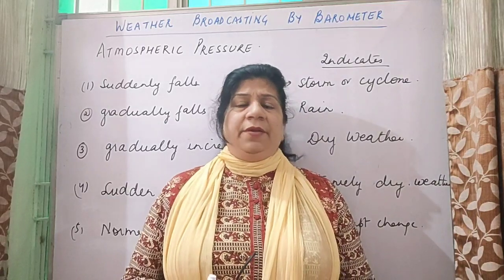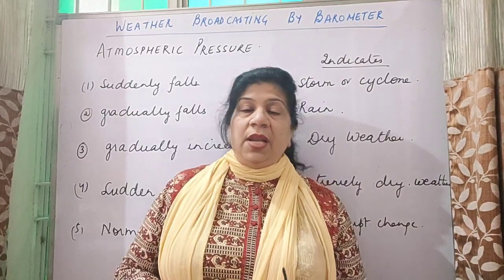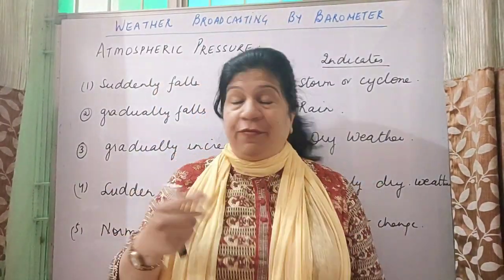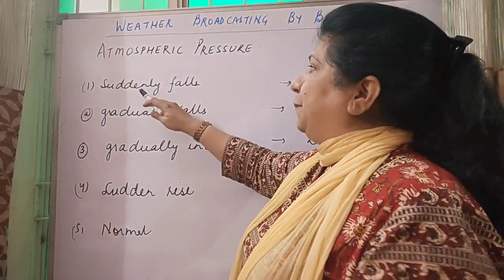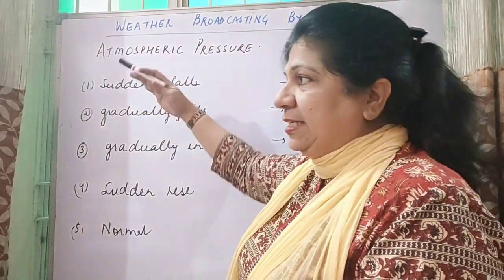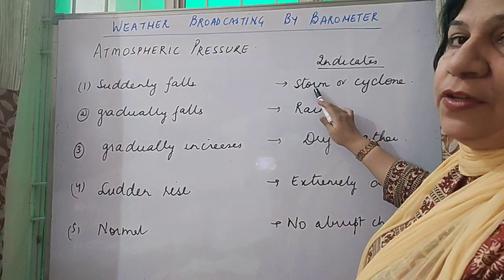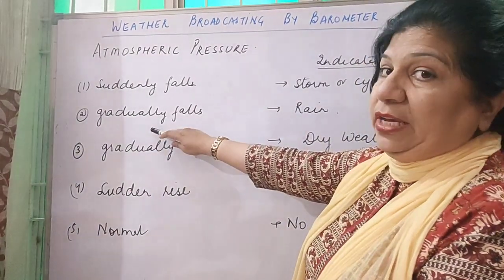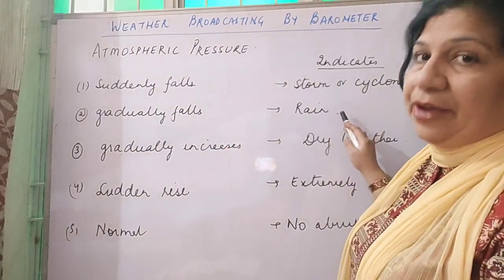There are more refined versions of this but we are studying the basic one, so let us see. As I told you, the atmospheric pressure can be directly read from the aneroid barometer. When the atmospheric pressure suddenly falls, that indicates the arrival of a storm or cyclone. If the pressure is falling gradually, then rain is predicted.